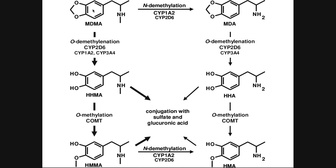In terms of metabolism, going down the left versus the right side is the same pathway — the only difference is whether or not it gets N-demethylated first. The nitrogen on the amine has a methyl group, which is N-demethylated by CYP1A2 and CYP2D6. When this methyl group is removed, MDMA becomes MDA. Both MDMA and MDA then undergo the same downstream pathway.